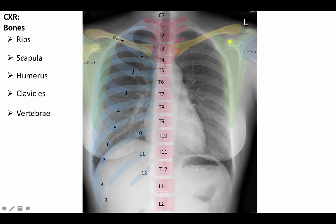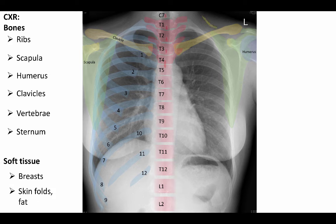The vertebrae are visible in the midline. We can especially see the spinous processes of the vertebrae along the midline. The sternum is often obscured by other midline structures and is not visible here. Soft tissues such as the breast, nipples, skin folds, and sometimes adipose tissue between muscular layers, are also visible.